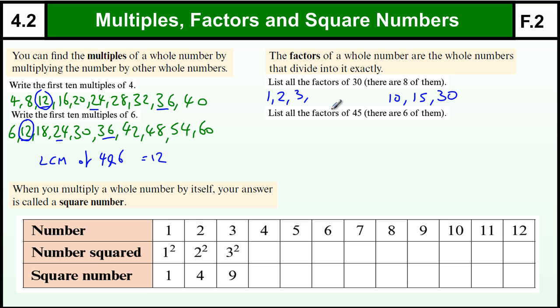10 times. 4 doesn't go into 30 because 4 eights is 28. 5 goes into 30 6 times, and there's all 8 factors of 30.